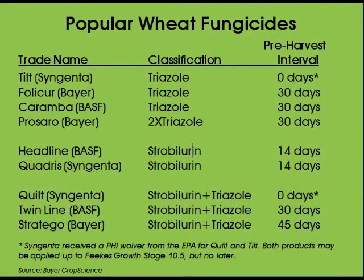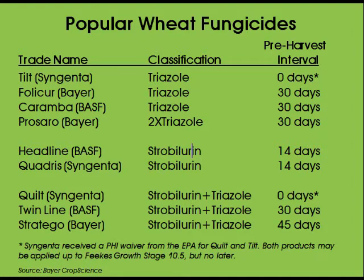Hudek says wheat producers have a choice of fungicide classifications to choose from. Triazoles cure, eradicate, and prevent fungal diseases, while strobilurins prevent diseases only and have good residual properties. Strobilurins must be applied earlier than triazoles in order to prevent the disease from infecting the crop. There are also several combination triazole-strobilurin products on the market, according to Hudek.